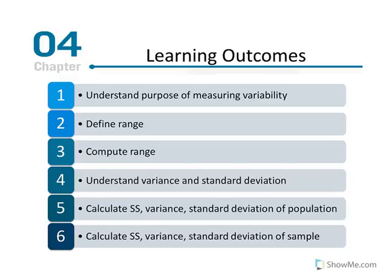We'll learn to define the range — the span of scores, or how many scores are being displayed in a distribution — and how to compute it. We'll understand variance and standard deviation. Briefly, variance is the average of squared deviations, and standard deviation is the average deviation between scores and the mean of a distribution. The standard deviation is the most important statistic you will learn in this course, applicable to many subsequent statistical procedures. Both its computation and definition are essential.